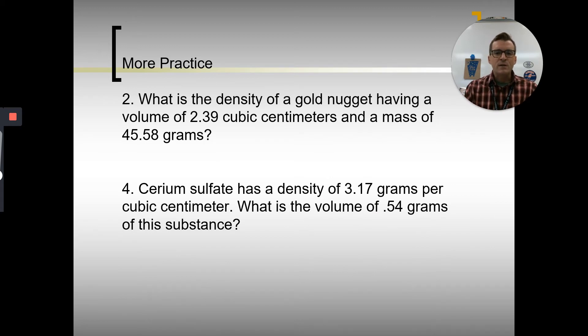So number two asks, what is the density of a gold nugget having a volume of 2.39 cubic centimeters and a mass of 45.58 grams? Maybe try that on your own, see what you can do. And then number four is asking... actually, maybe let's do number two real quick. Changing my plans. So let's do our little visual aid up here. Density, mass, volume. So number two, we're asked to find density. So we know, oh, density is mass over volume.